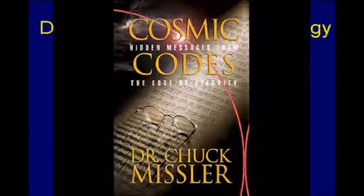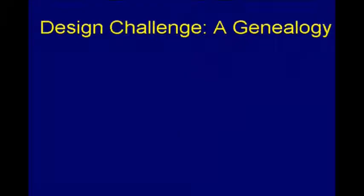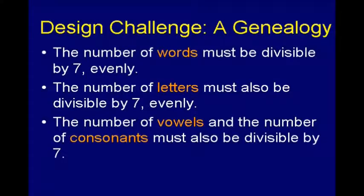I'd like you to see if you can write a genealogy, but I want you to meet certain requirements. The number of words should be divisible by seven evenly. When you divide the number of words you're going to use by seven, it comes out even. That means you can use seven words, 14, 21, 28, 35, 42, 49 — you get the idea. Whatever number of words you decide to use, it's divisible by seven exactly.